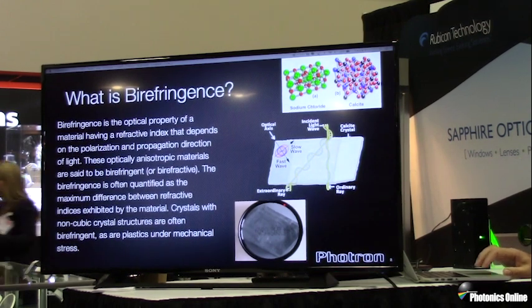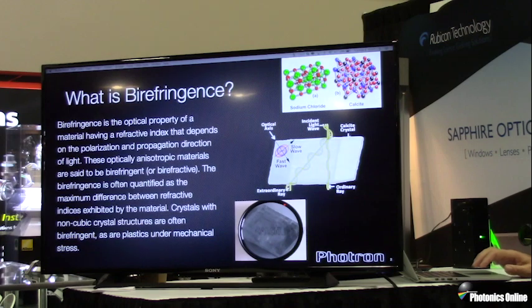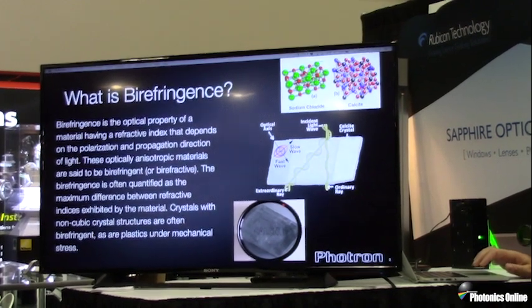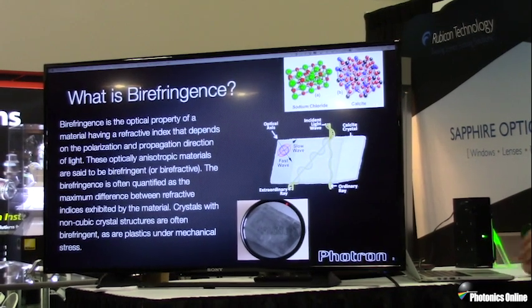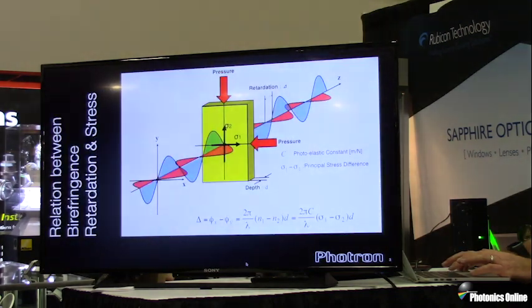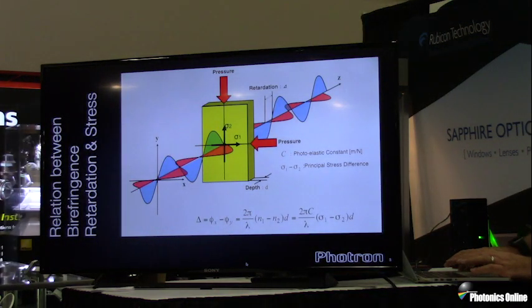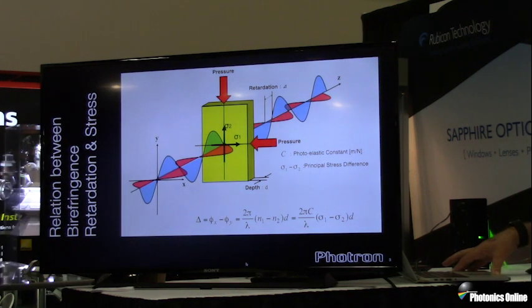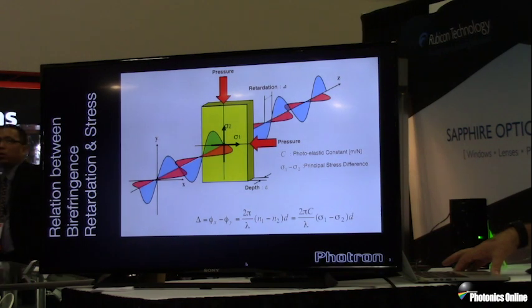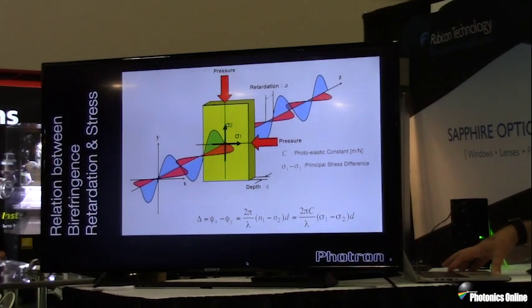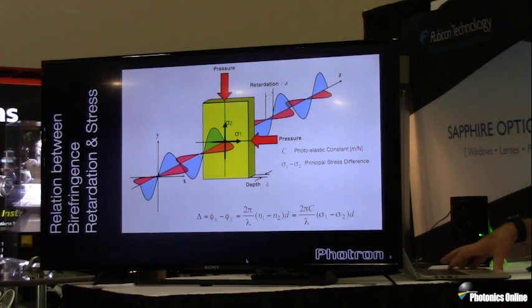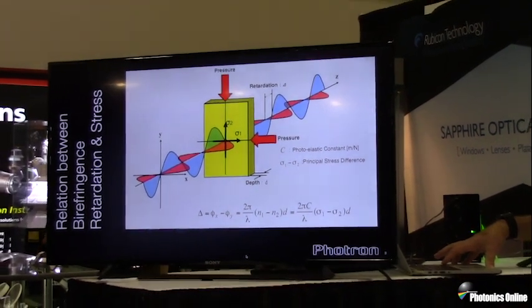The difference between these two paths results in one ray coming through the material a little slower than the other. This difference, typically measured in nanometers, is referred to as birefringent retardation or double refraction, and there is a direct correlation between the retardation and the stress. Birefringence is the optical property of a material having a refractive index that depends on the polarization and propagation direction of light, and is often quantified as the maximum difference between the refractive indices exhibited by the material.